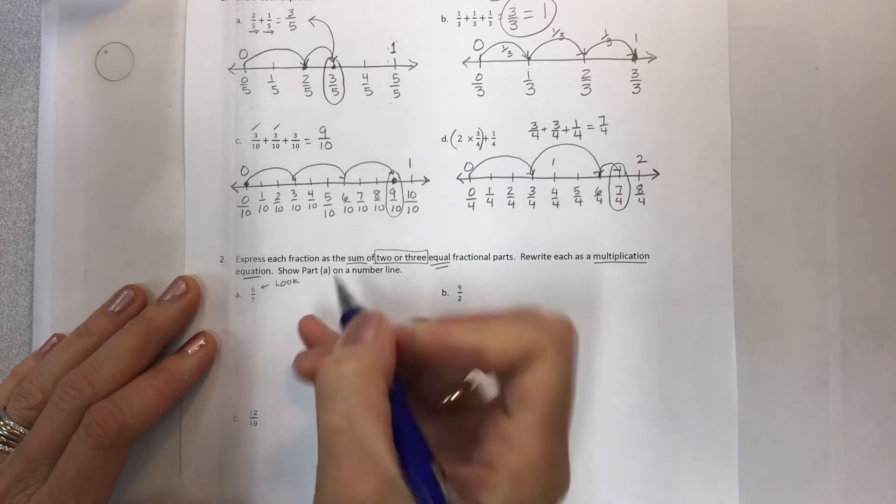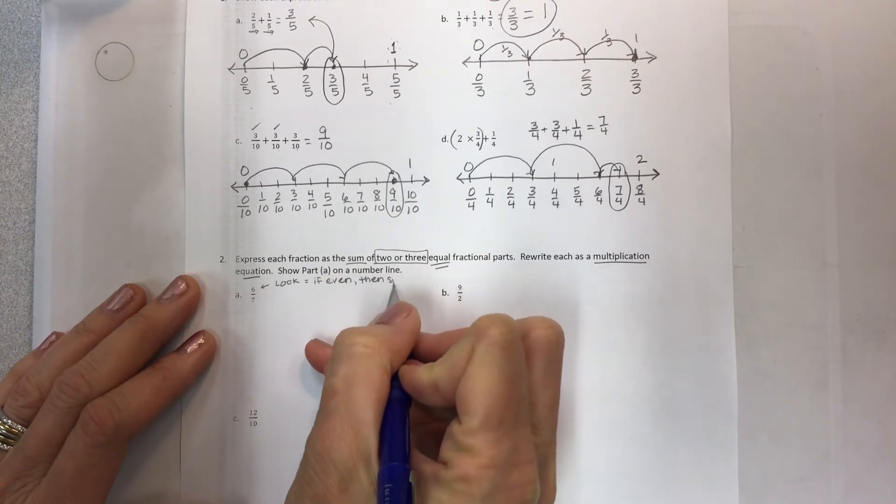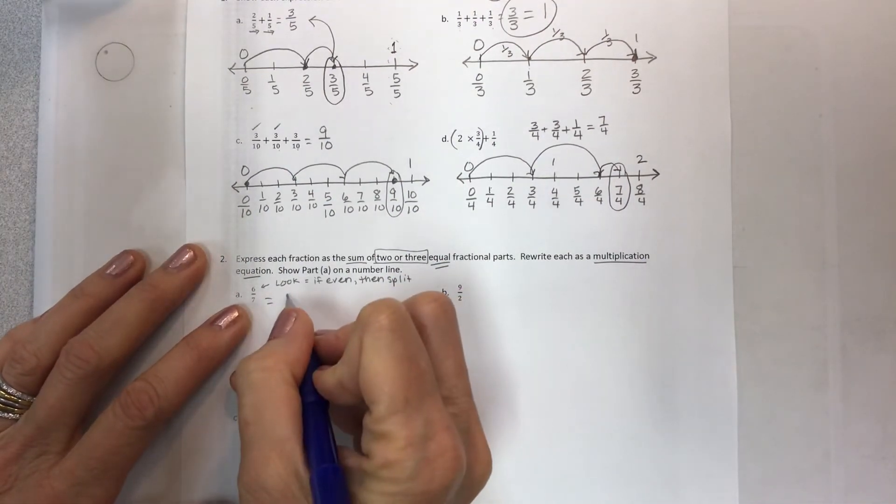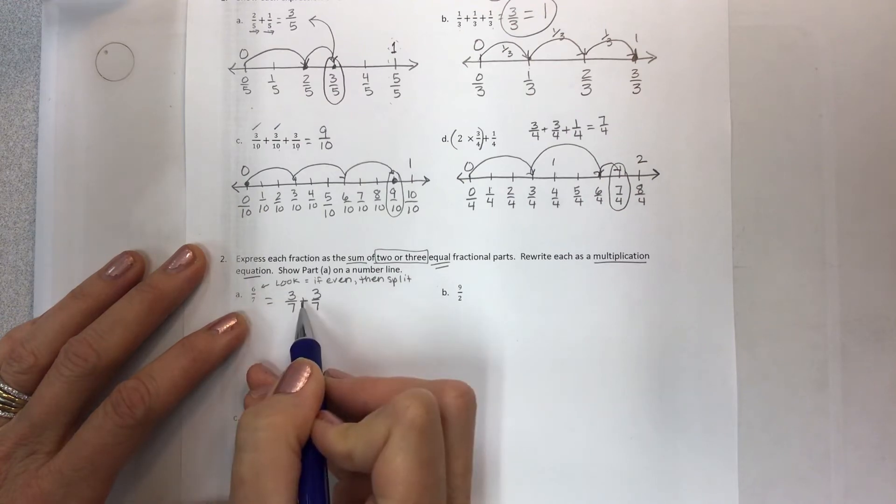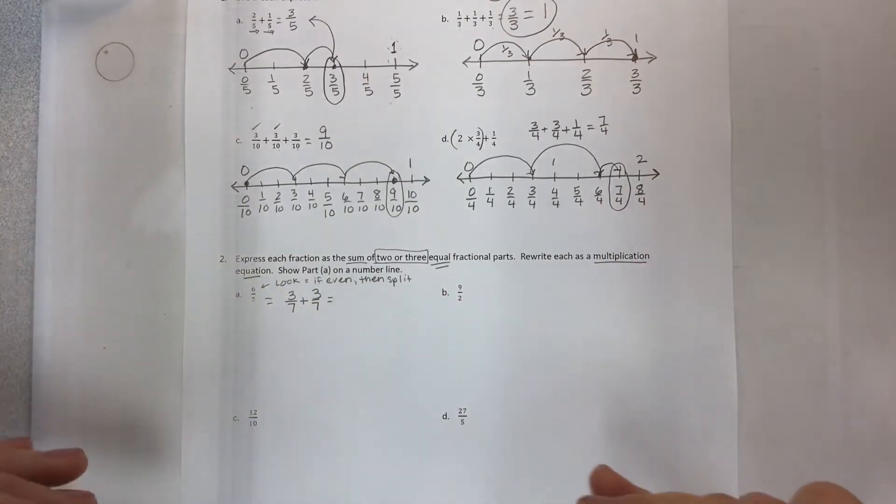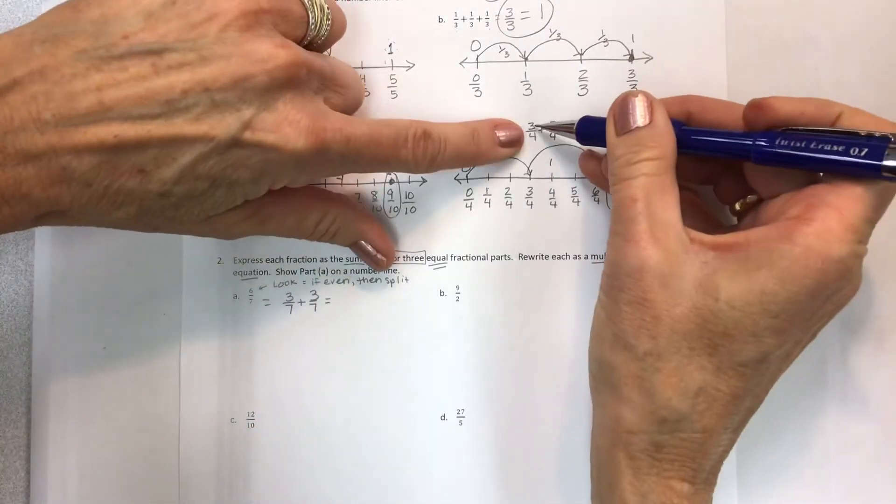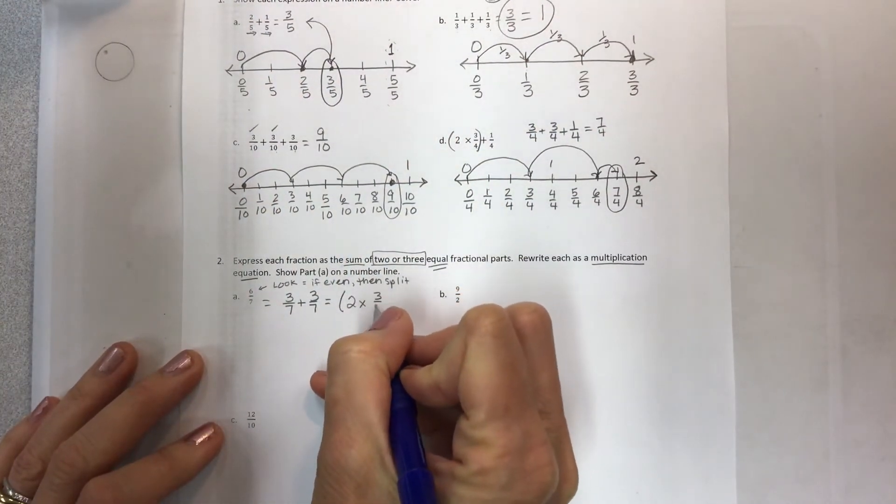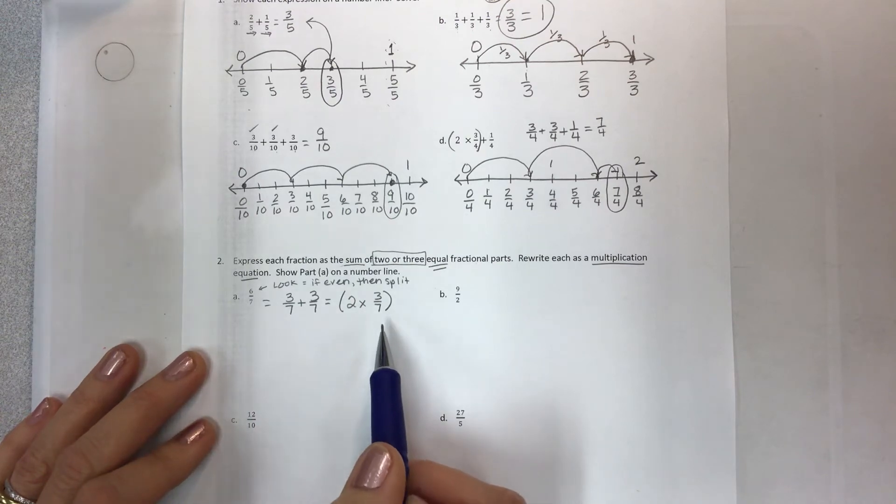And we're going to show part A on a number line. So the trick here is to look at the numerator. So look. If it's even, then split it. If it's odd, we'll have one that comes out. So instead of six sevenths, we're going to do three sevenths plus three sevenths. Because that is equal to six sevenths. I also have to rewrite this as a multiplication equation. So I know this is all brand spanking new. But if I have the same fraction two times, if I have the same fraction two times, guess what? You just go like this. Two times whatever the number is. Three sevenths. So look at that. I rewrote it as a multiplication equation. And I'm done. That's all I have to do there.